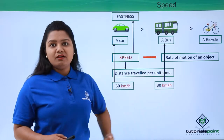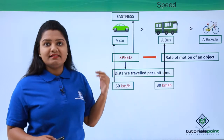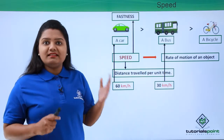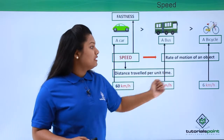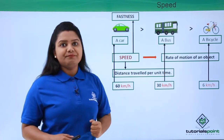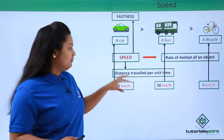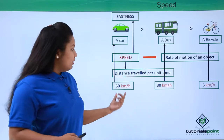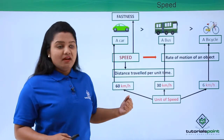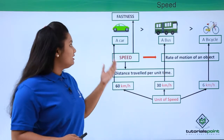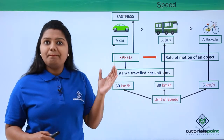We can do the same for the bicycle. The bicycle travelled 60 km but took 10 hours, so at the end of one hour it must be covering 6 km, and thus the speed of this bicycle is 6 km per hour. In all three cases you will notice a number accompanied by km per hour — this whole thing is the speed of that object. The kilometers per hour is the unit of speed, and the numbers 60, 30, and 6 refer to the magnitude of speed.